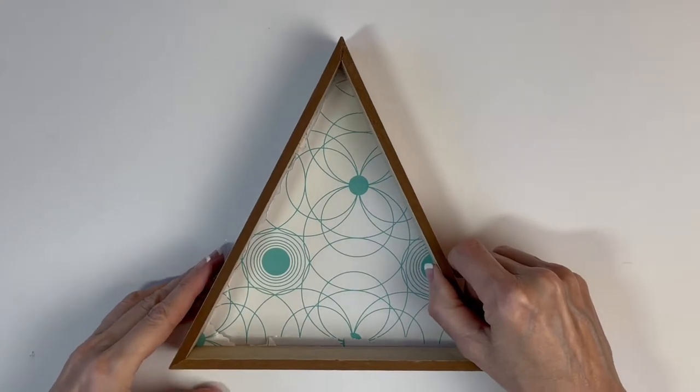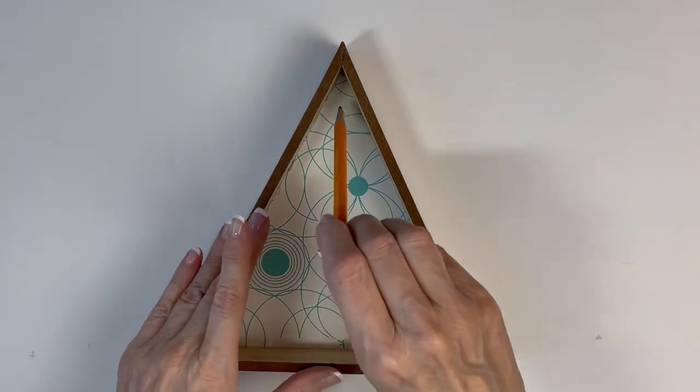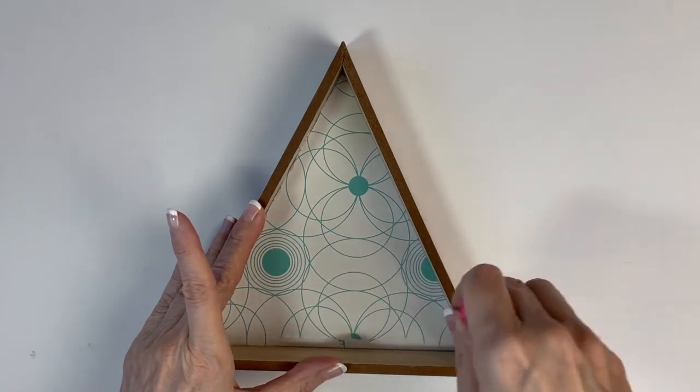Place the frame back onto the backing. With a pencil, trace the inside of the frame. This will give you the borders for light placement.